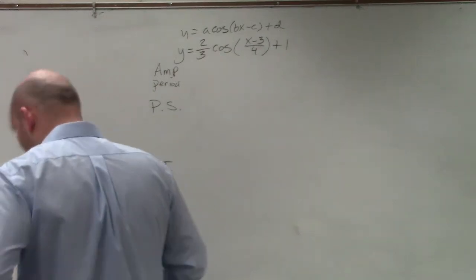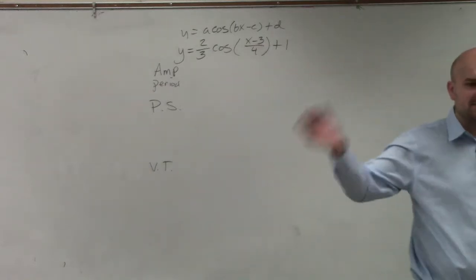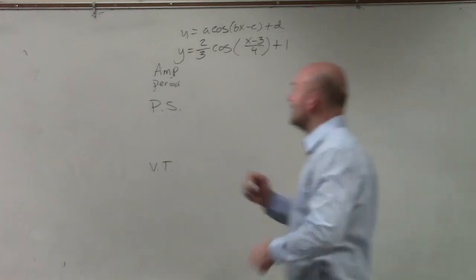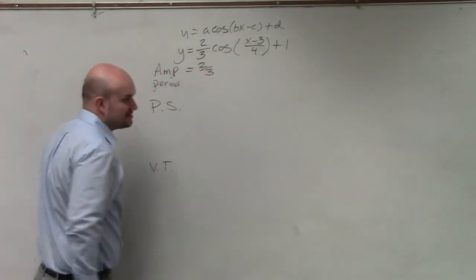Next example. Amplitude, period, phase shift, and vertical translation. Amplitude is the absolute value of A, right? A is what we're multiplying our function by. Absolute value of 2/3 is just equal to 2/3.